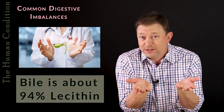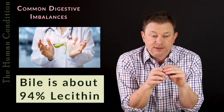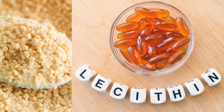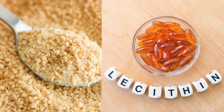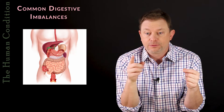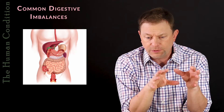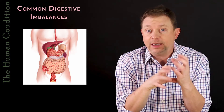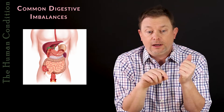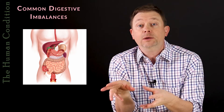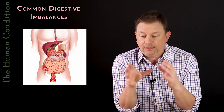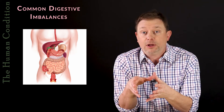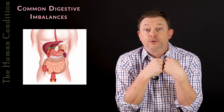Bile itself is about 94% lecithin, and lecithin is a simple emulsifier that comes from nuts, seeds, and all kinds of foods we eat. We concentrate this lecithin and make bile out of it. Once we release this bile, it circulates through the intestinal system — through the small intestine — and helps to digest and break down our food. It's reabsorbed at the end of the small intestine, which is more than 20 feet of length, before the large intestine.